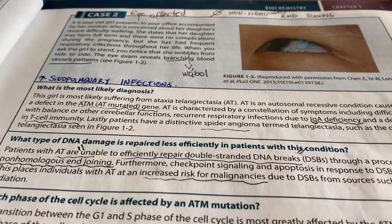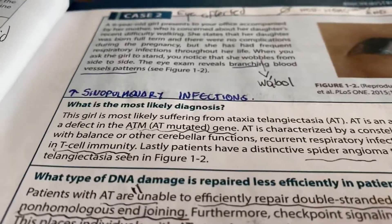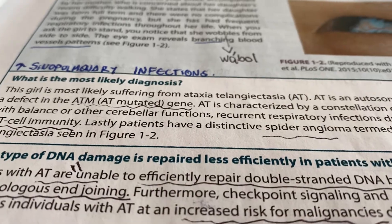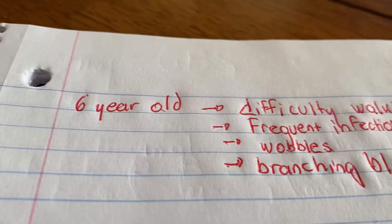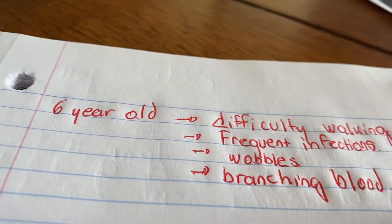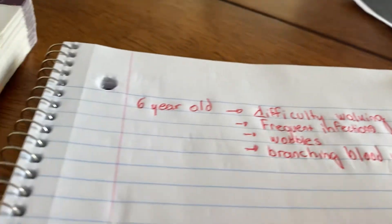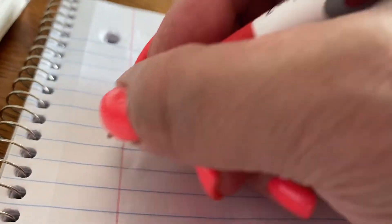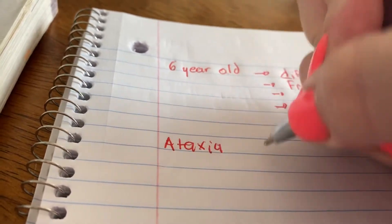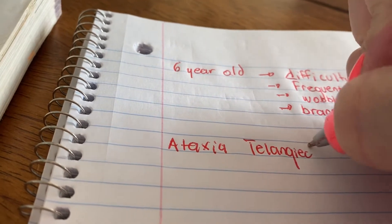So we say this patient has ataxia-telangiectasia. How do we know that? We look at these again — those are the bad things that she has. And then what we saw, those things. So we say this patient has ataxia-telangiectasia.